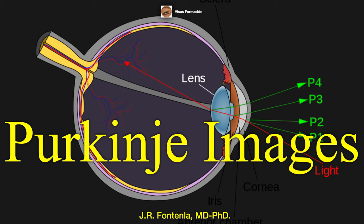Purkinje images are reflections of light, especially infrared light, which can be seen on various ocular anatomical structures.